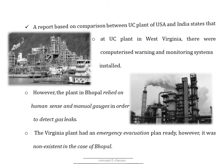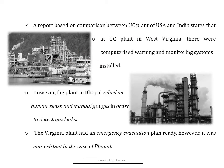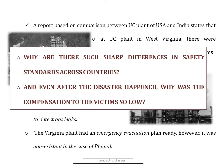A report comparing the UC plant in the USA and India states that at the UC plant in West Virginia, there were computerized warning and monitoring systems installed. However, the plant in Bhopal relied on human senses and manual gauges to detect gas leaks. The Virginia plant also had an emergency evacuation plan ready, whereas this was non-existent in Bhopal. So why are there such sharp differences in safety standards across countries, and why was compensation to victims so low?